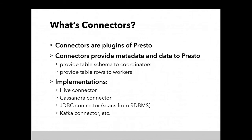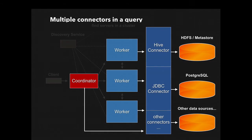Connectors are a very important point of Presto. They are open-sourced plugins available on the web. Connectors provide metadata and data to Presto — table schema to Coordinators and actual table rows to Workers. Example implementations are Hive Connector, Cassandra Connector, JDBC Connector, and Kafka Connector. The Hive Connector reads data from HDFS. The JDBC Connector can use other databases such as MySQL, PostgreSQL, or Redshift to scan data. Interestingly, we can use multiple connectors in a single query — for example, select from Hive and join with PostgreSQL and other datasets. With this architecture, Presto can join other databases.